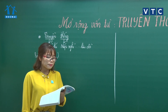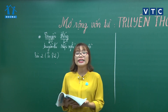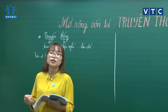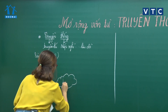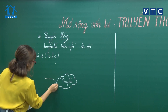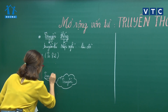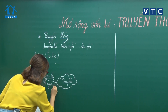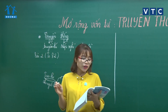Dựa vào nghĩa của tiếng truyền, xếp các từ trong ngoặc đơn thành 3 nhóm. Truyền có 3 nghĩa: nghĩa thứ nhất là trao lại cho người khác, thường là thuộc thế hệ sau. Với bài tập này cô sẽ hướng dẫn các con vẽ sơ đồ tư duy. Nhánh đầu tiên: truyền có nghĩa là trao lại cho người khác. Nghĩa thứ 2 là truyền có nghĩa là làm lan rộng cho nhiều người biết.